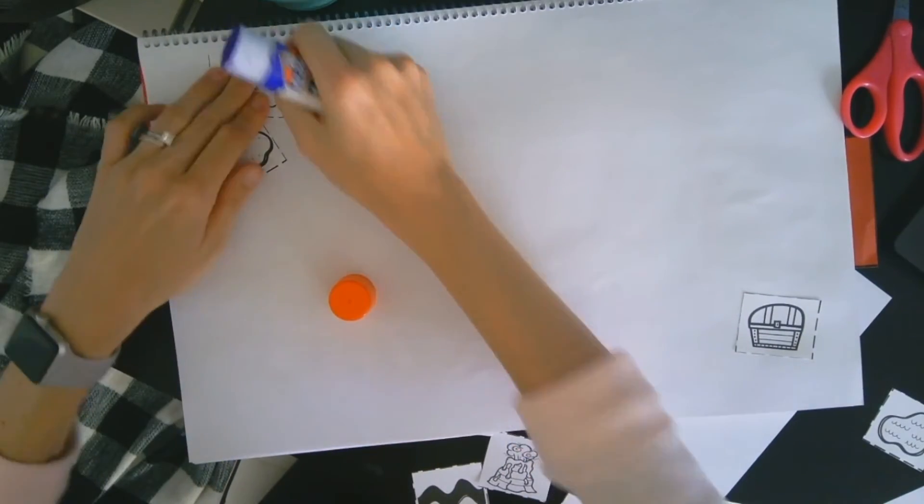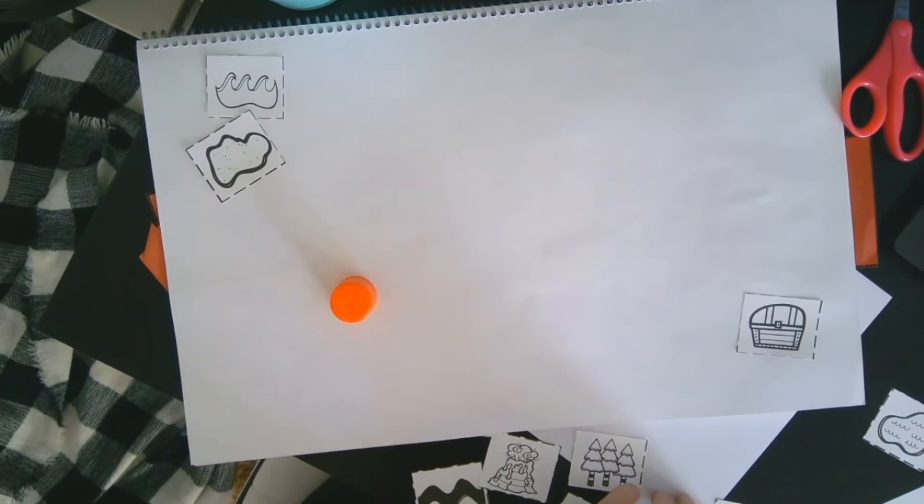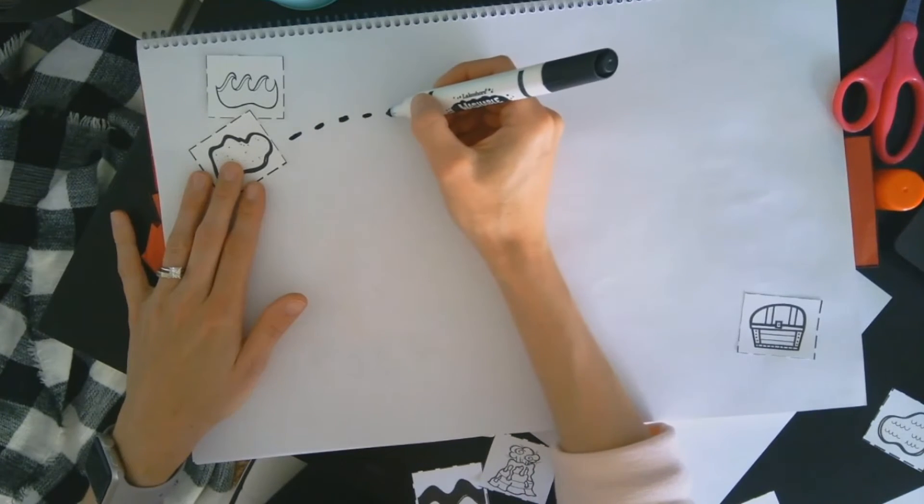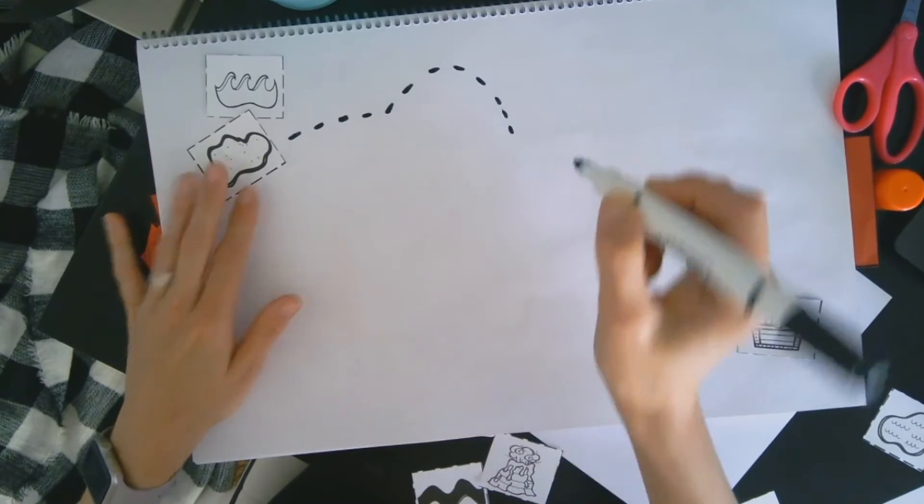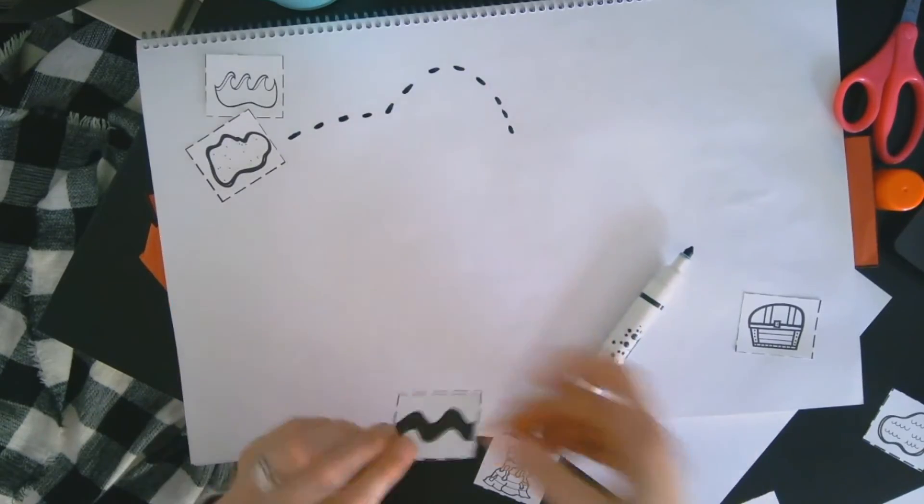So we are next to the ocean playing in the sand. To get to my treasure, first we have to go over the river. So I did a line, so we would go over, and I am going to put my river.